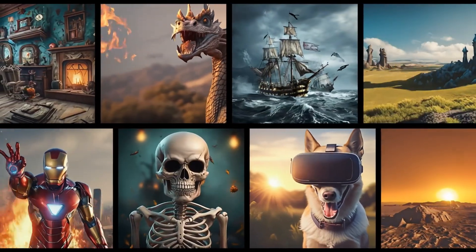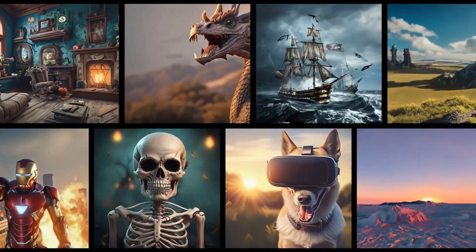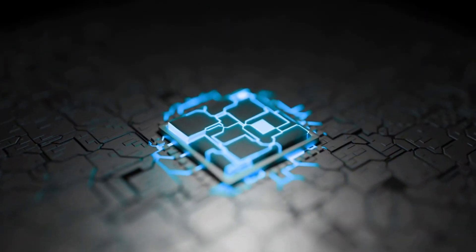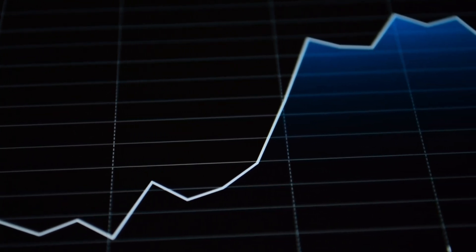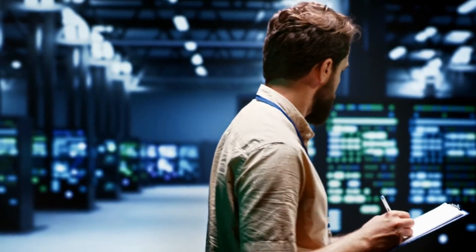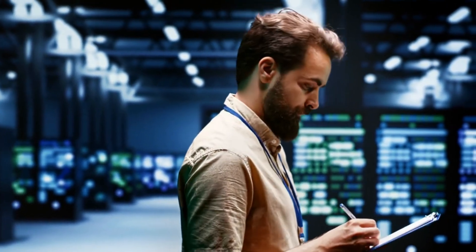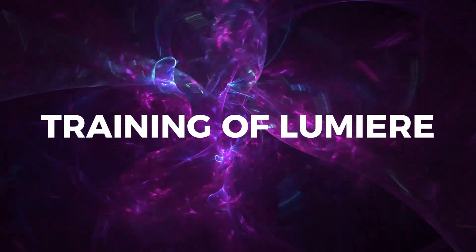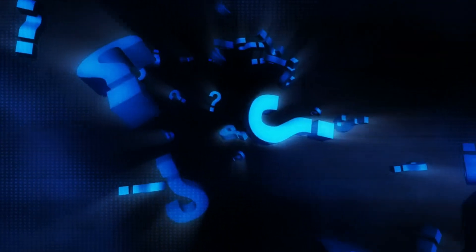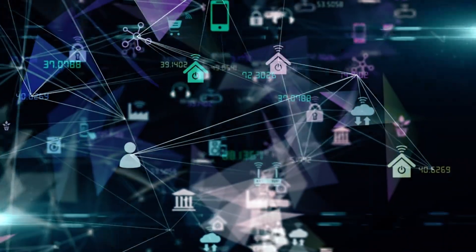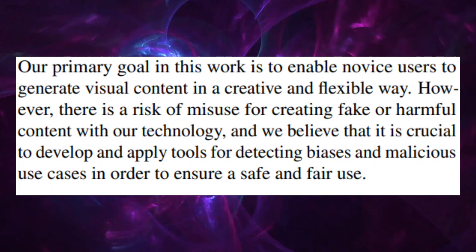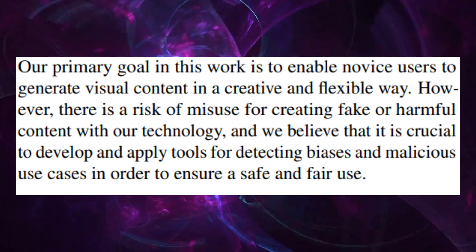Lumiere, with its groundbreaking capabilities, also faces significant technical hurdles. One of the most pressing challenges is the immense computational power required to run the model. This high demand for resources can limit access for average users who lack the necessary hardware, making it a tool more suited for organizations with substantial computational infrastructure. Moreover, the training of Lumiere is another area of concern. To accurately generate videos from texts, Lumiere needs to learn from a vast array of high-quality video data. This raises critical questions about where this data comes from, how it's sourced, and the privacy implications associated with using such extensive datasets. Ensuring the data is ethically collected and respects user privacy is paramount, yet challenging.